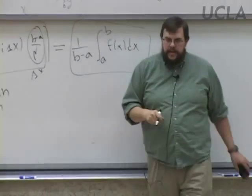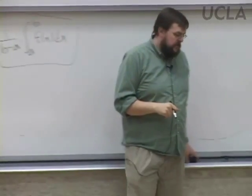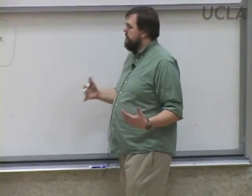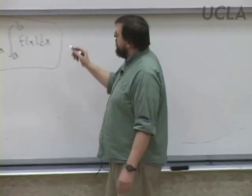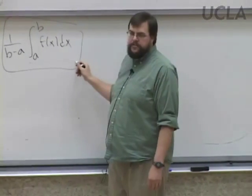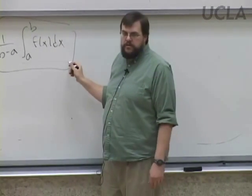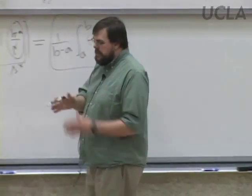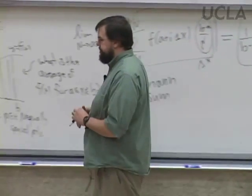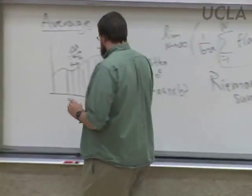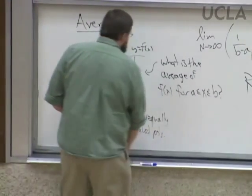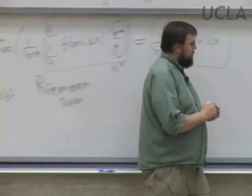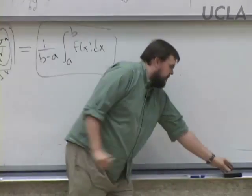So this is what we define the average of the function to be. If I want to find the average of a function between two points a to b, it's very simple: I integrate from a to b whatever the function is, and I divide by the length of the interval (b − a). That's how we can use the integral to find the average.